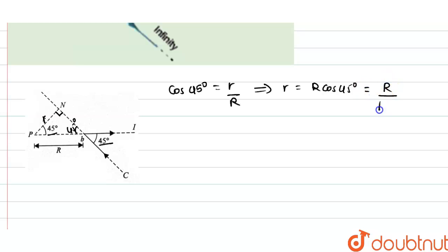Now we have calculated the perpendicular distance between point P and the wire. Now we know that magnetic field is given by B equal to mu naught i